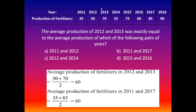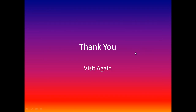Now checking 2011 and 2017: 2011 contains 35 tons and 2017 contains 85 tons. Average equals (35 + 85) divided by 2, which also equals 60. The values are the same, so the required answer is option B: 2011 and 2017. The average production of fertilizers in 2011 and 2017 equals the average production in 2012 and 2013. Thanks, visit again in the next video.